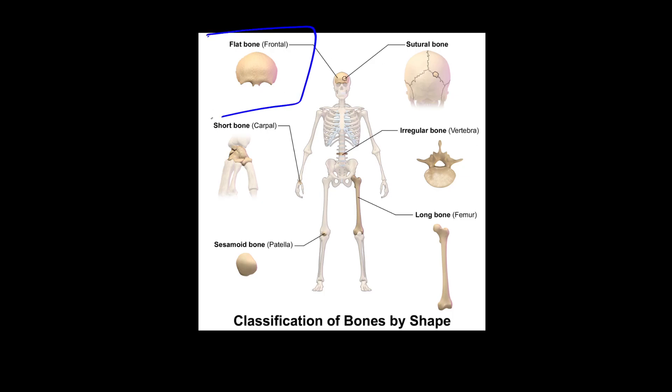We could think about flat bones as being like this bone on the front of your skull or maybe the shoulder blade. On the skull in particular, there's these little things called suture bones, which you don't really see too many other places in the body. You've got short bones like those in the carpal bones in the wrist right here or the tarsal bones of the foot.